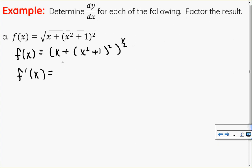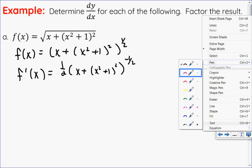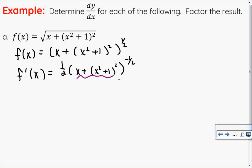So I'll bring the one half down, keep my base the same, and then decrease my power by one. Now here comes the chain rule part. So I'm going to do the derivative of the inside. The derivative of x plus x squared plus one squared: bring the two down, decrease my power by one, and then multiply by the derivative of the inside.